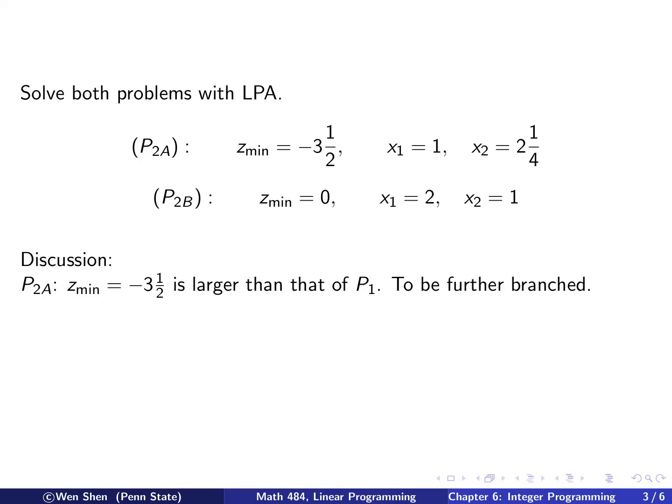So let's make some discussion about these two solutions. So let's look at the 2a. 2a says, with that additional constraint, we have a z-min that's negative 3.5. And we see that this one is larger than the z-min we obtained at P1. That's quite reasonable, because we put more constraints, and the feasible region shrinks, and then the minimum value becomes larger. And the solution here is not integral, so this needs to be further branched out.